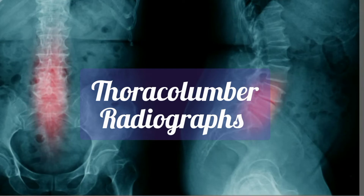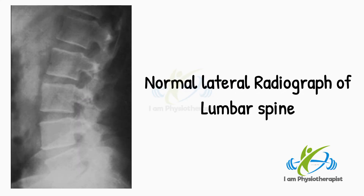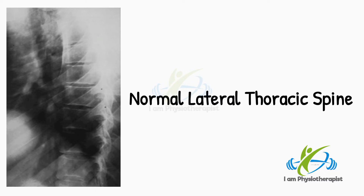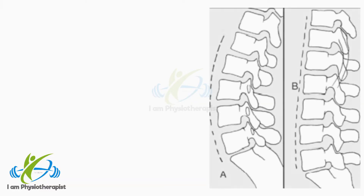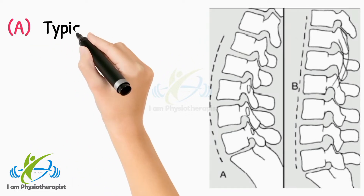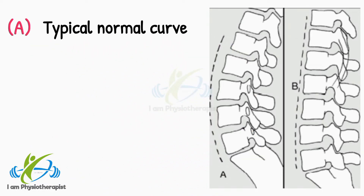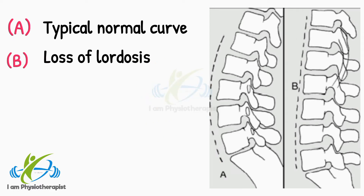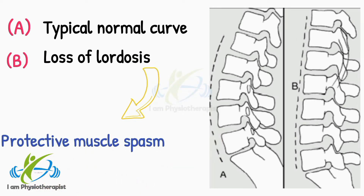Thoracolumbar radiographs: Normal lateral radiograph of the lumbar spine and normal lateral thoracic spine. In the lateral view, note first the lumbar curve. Point A shows a typical normal curve; point B shows loss of lordosis. This is most often seen in prolapsed intervertebral disc as a result of protective muscle spasm, but is not confirmatory.